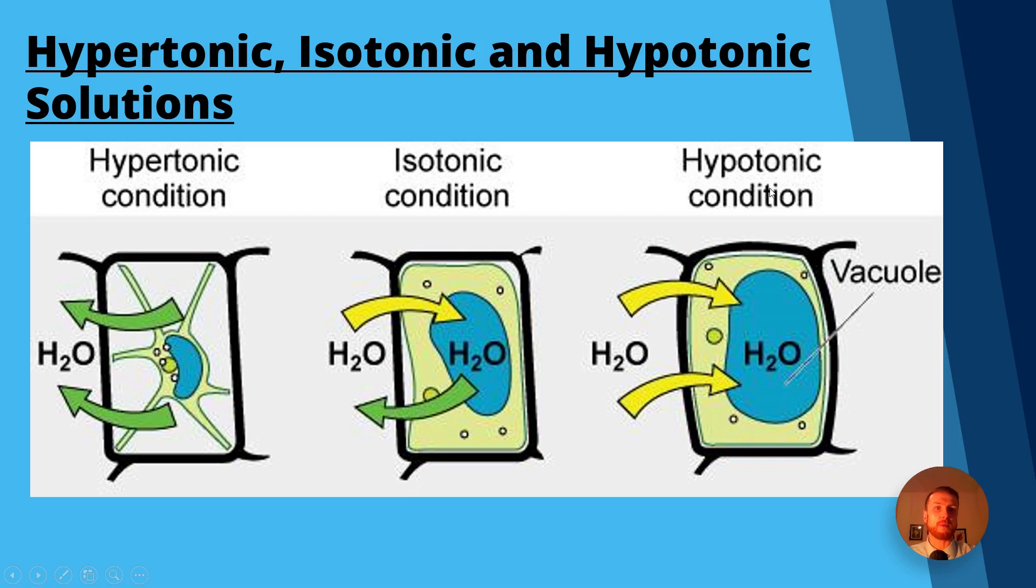Now this is a recap on what would happen to a plant cell if kept in a hyper, iso, or hypotonic solution, and we need to link this to potatoes. The potato cylinders you're going to look at will be made up of many cells, so this will be happening to many cells at the same time. If they're placed in a hypertonic solution such as a sucrose concentration, water will leave via osmosis. If they're in an isotonic solution, water will move in and out via osmosis at roughly the same rate.